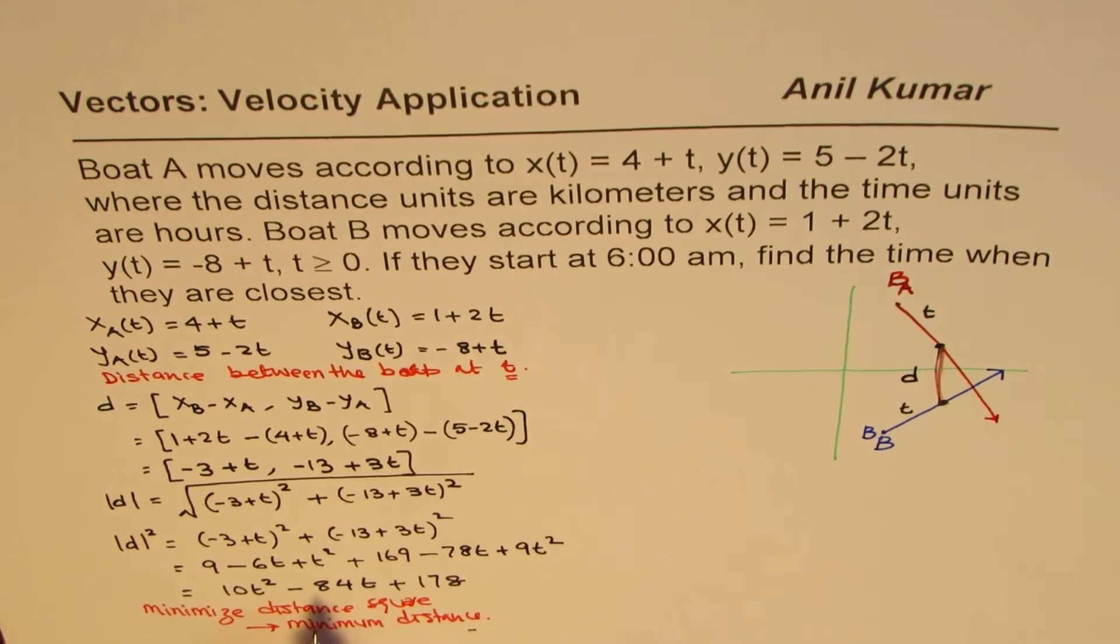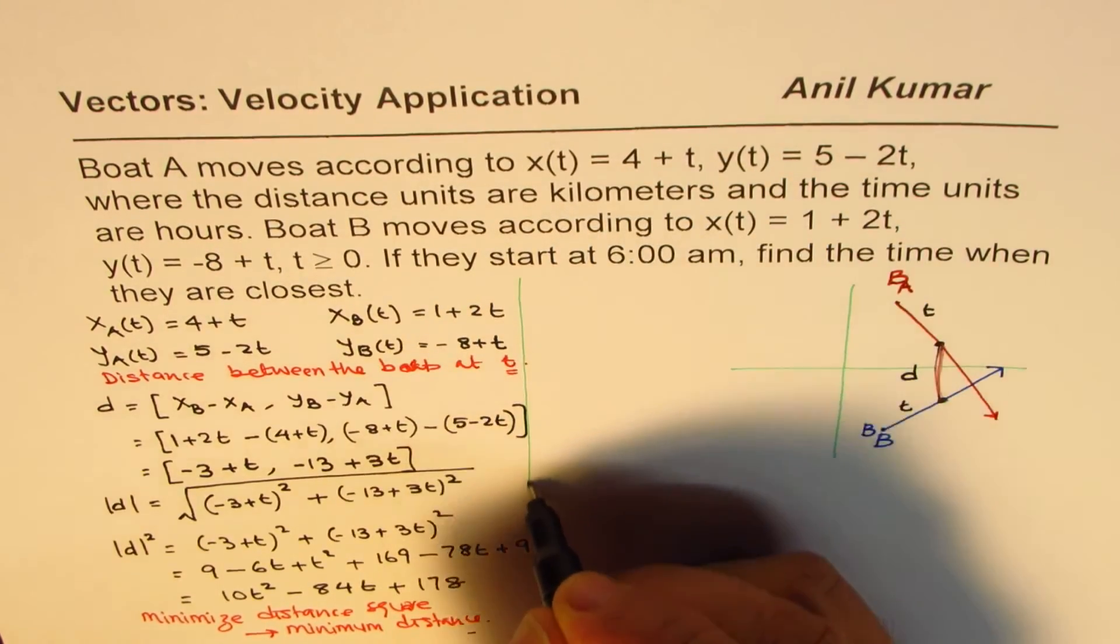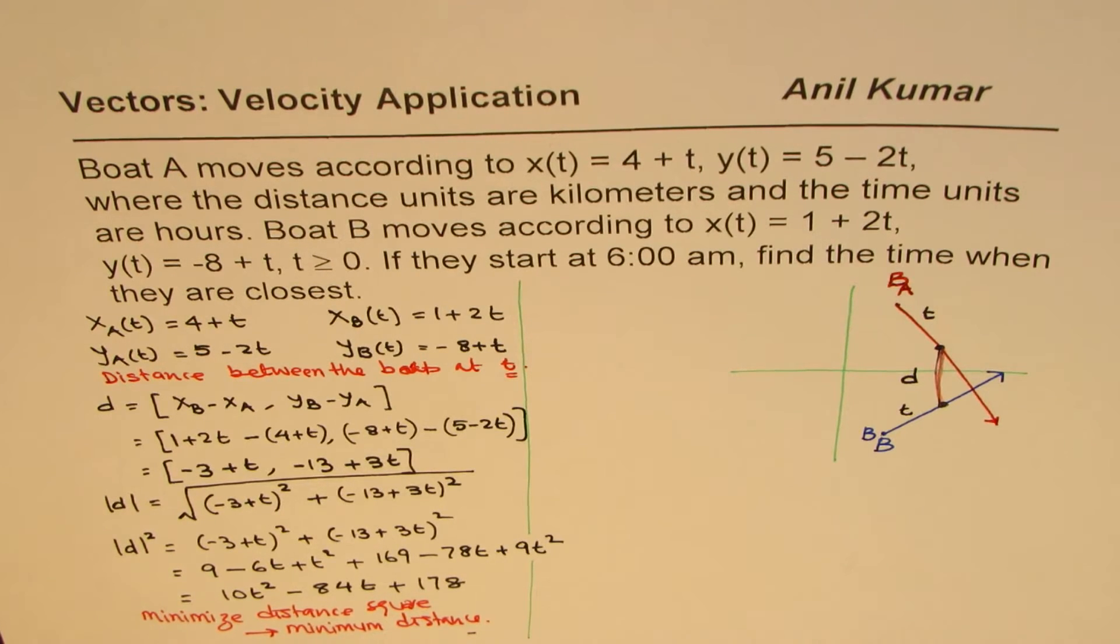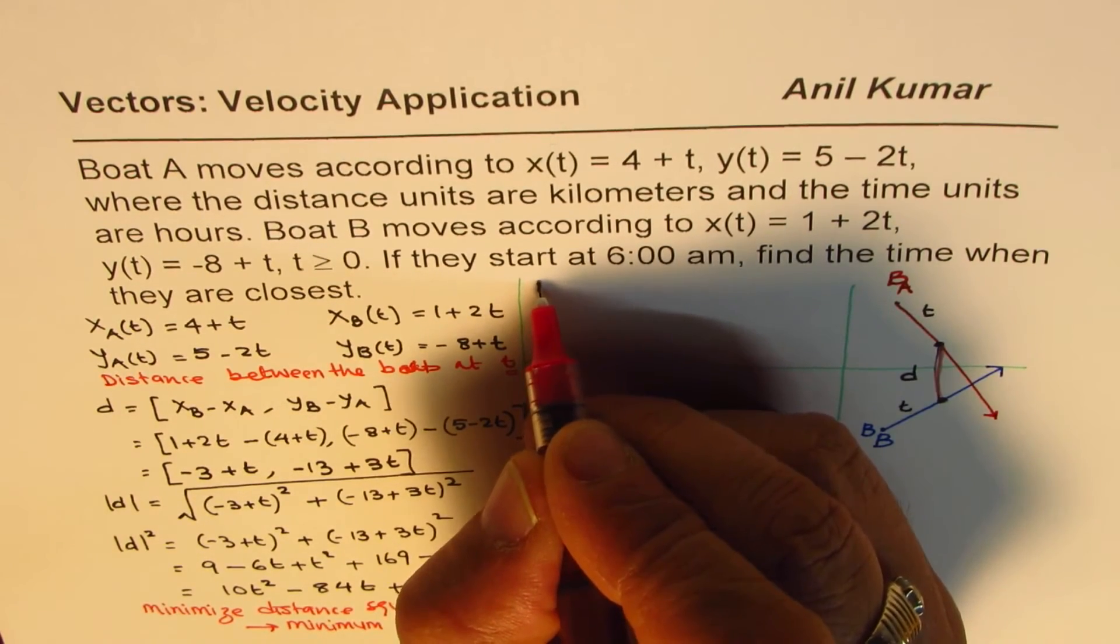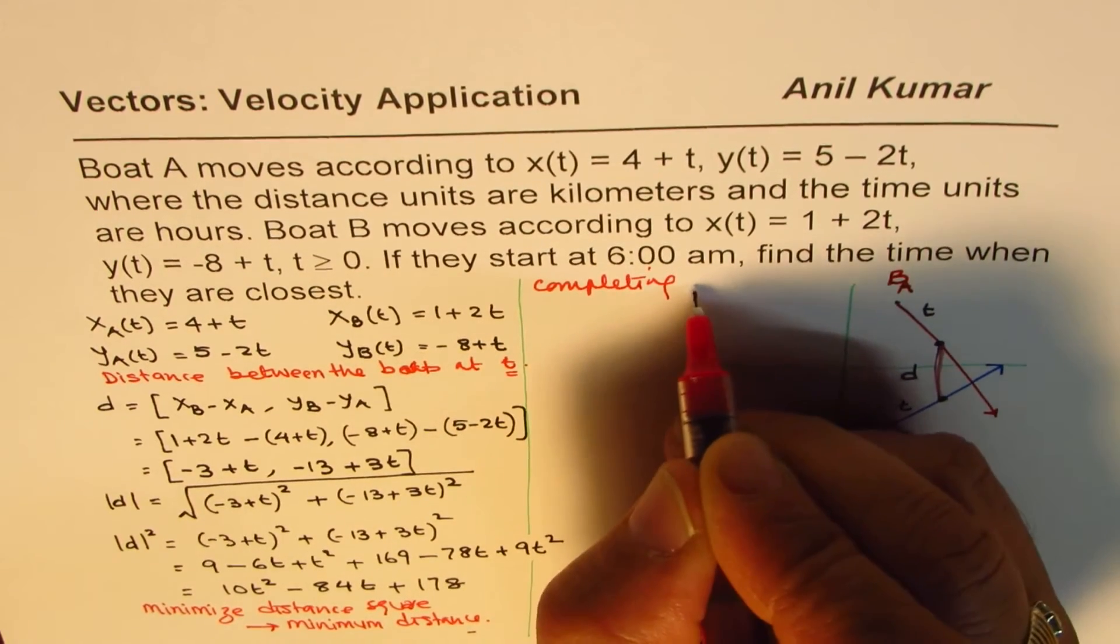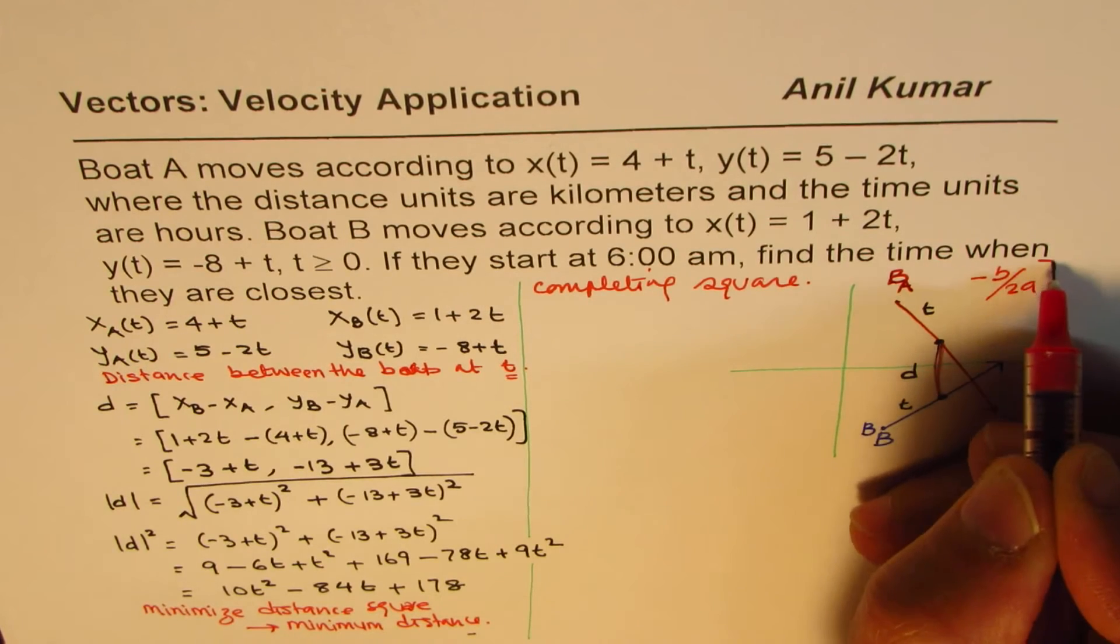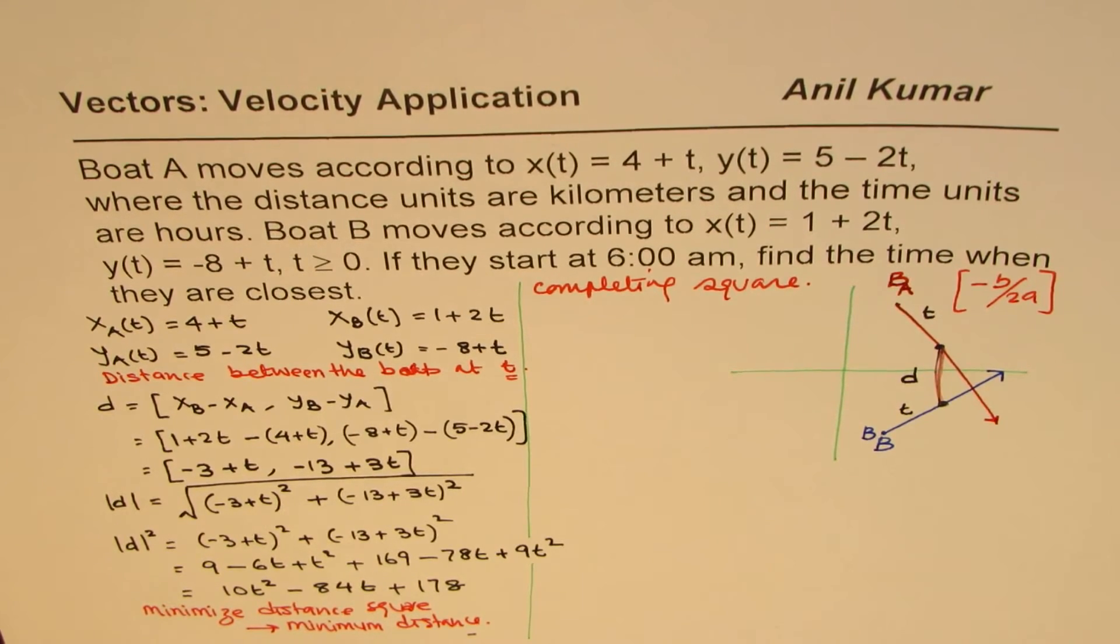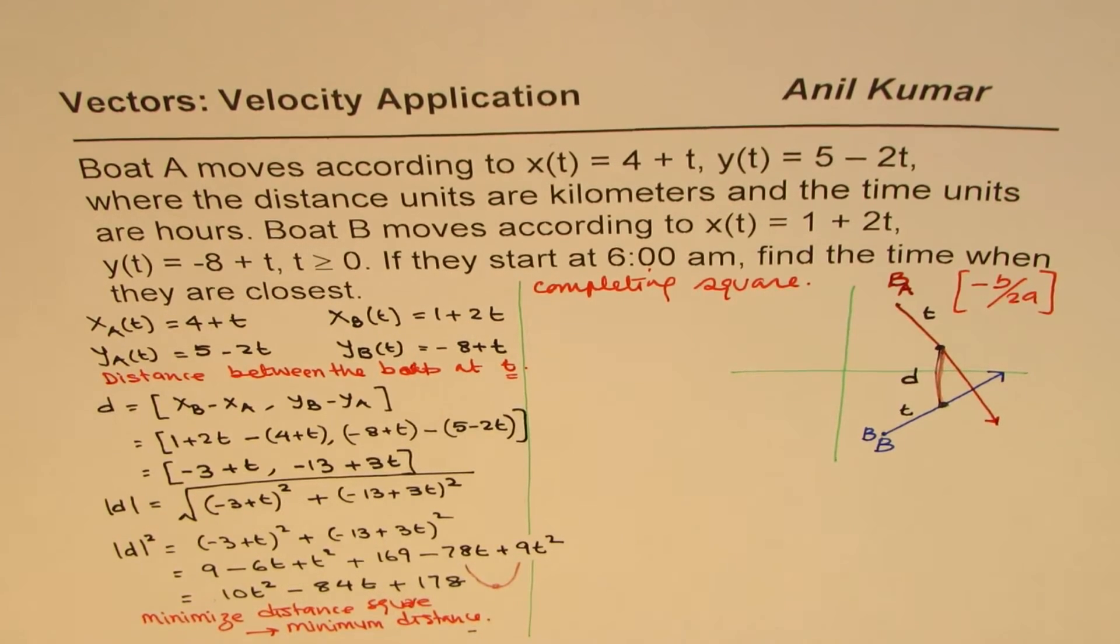Now some of you who have learned calculus can find the derivative of this and then find the minimum time. But most of my students have not done calculus so far. They will be doing it soon. So I am assuming they have not learned it and we will follow the techniques we have already learned. So the technique for minimum is completing squares. Some of you can also use -b/2a if you remember. That also gives you the minimum. Why are we saying minimum? Simply because this parabola is opening upwards. This parabola, positive coefficient, opens upwards, so it has a minimum. We need to find the time when it is minimum.